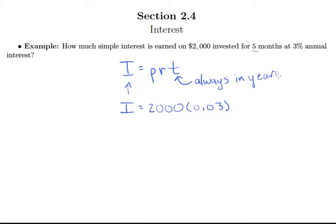So since T is always in years, I need to make five months into years. Well, the easiest way to do that is to understand that five months, there's 12 months in a year, so five months is about 5 twelfths of a year. So we'll put that fraction of 5 twelfths right there.